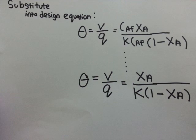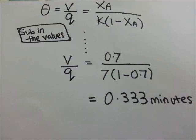We then substitute the conversion equation into the design equation. We obtain a design equation that is represented in the form of conversion. Now, we can find the residence time using the design equation which is represented in the form of conversion.